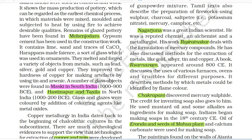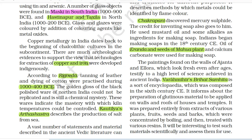A book, Ras Arnava, appeared around 800 CE. It discusses the uses of various furnaces, ovens and crucibles for different purposes. It describes methods by which metals could be identified by flame color. Chakrapani discovered mercury sulfide. The credit for inventing soap also goes to him. He used mustard oil and some alkalis as ingredients for making soap. Indians began making soaps in the 18th century CE.